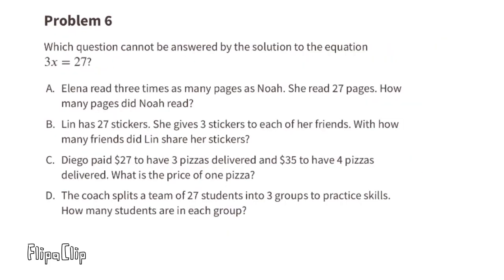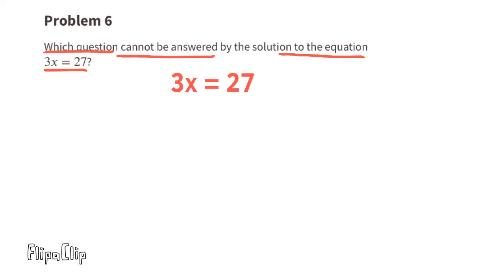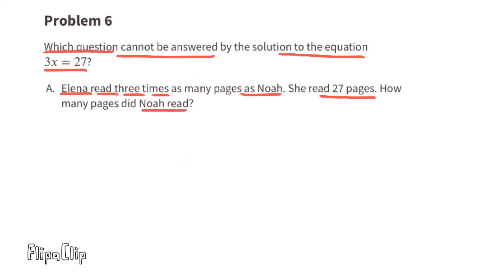Problem Number 6: Which question cannot be answered by the solution to the equation 3x equals 27? Solving: 3x divided by 3 equals x, and 27 divided by 3 equals 9, so x equals 9. We're looking for a situation where x does not equal 9.